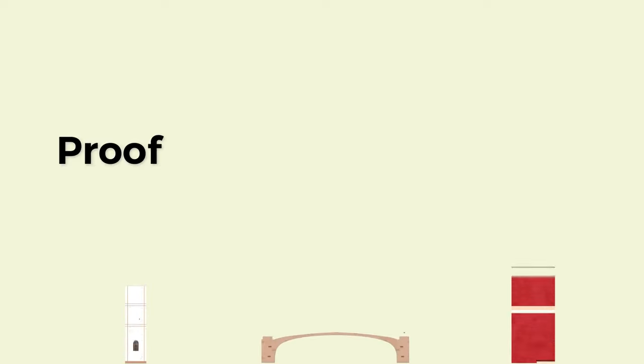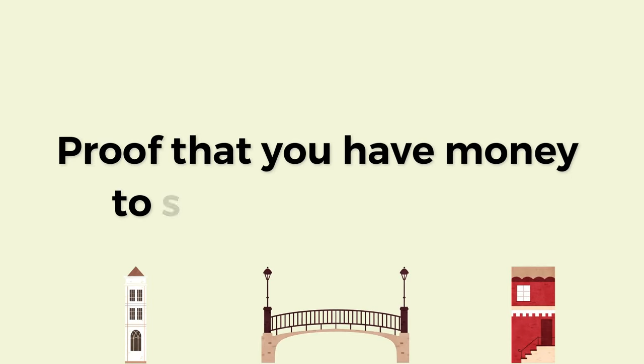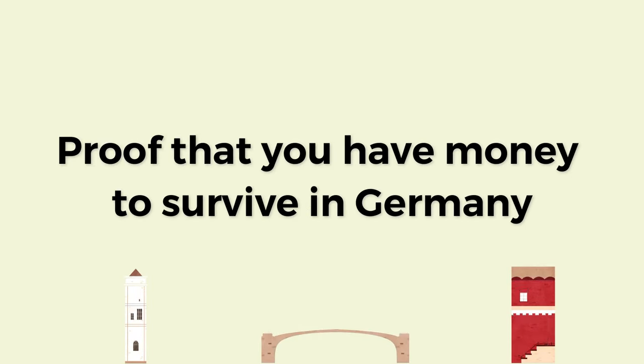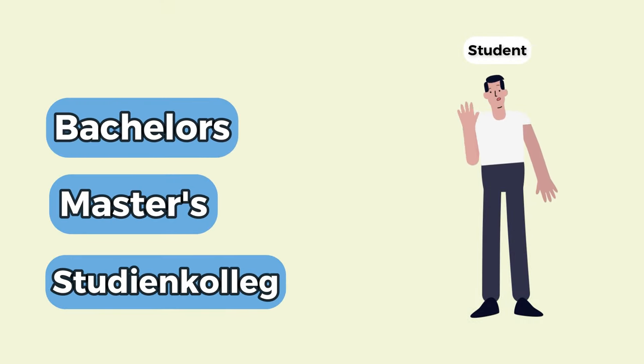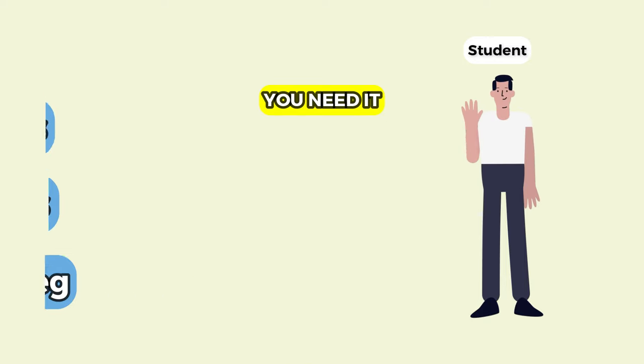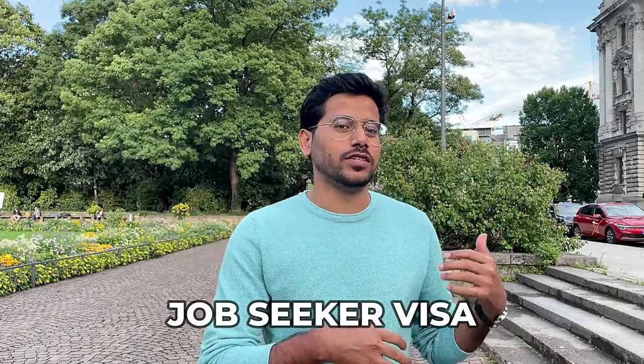Do you know what a blocked account is? In simple terms, it is proof that you have money to survive in Germany for some time — at least six months to one year. Who needs it? If you are a student coming for a bachelor's or master's, you need it. If you are coming on a job seeker visa, you need money to survive until you get a job, so you need it as well.